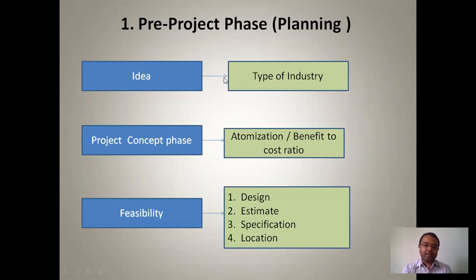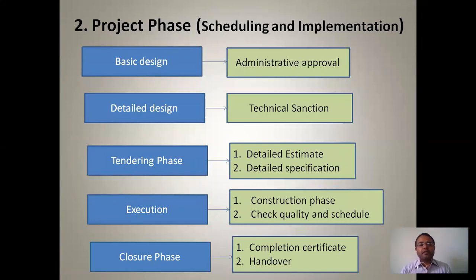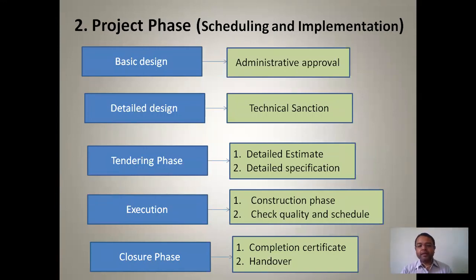So in the planning phase, all three things — idea, project concept phase, and feasibility — are at a preliminary level. We are going for an approximate estimate, not a detailed estimate. It's just a rough calculation for planning. The next phase is the project phase, which includes scheduling and implementation. In the first phase we just covered rough things — which type of industry, what level of optimization, where the locality of the industry is.